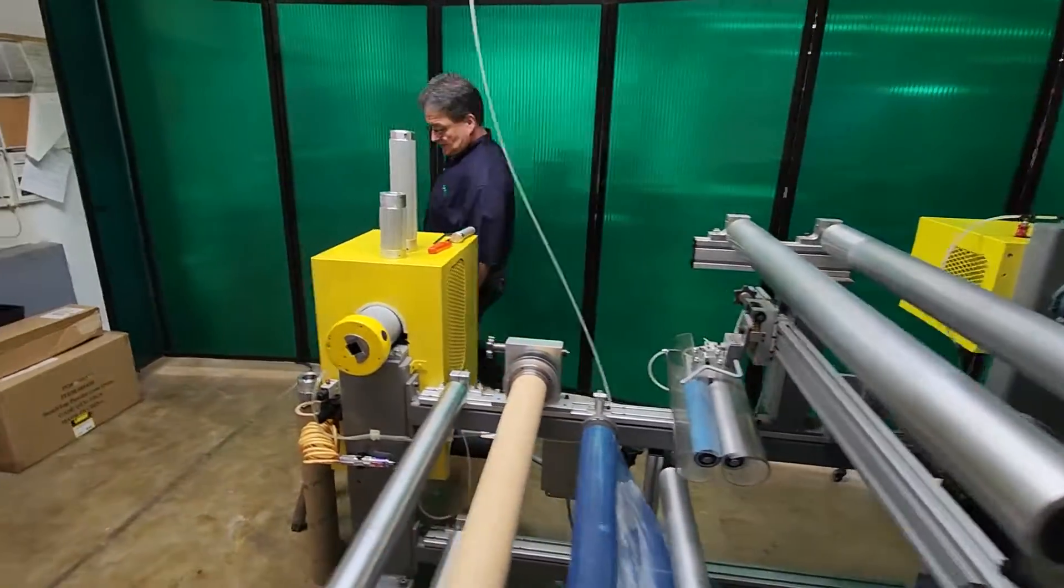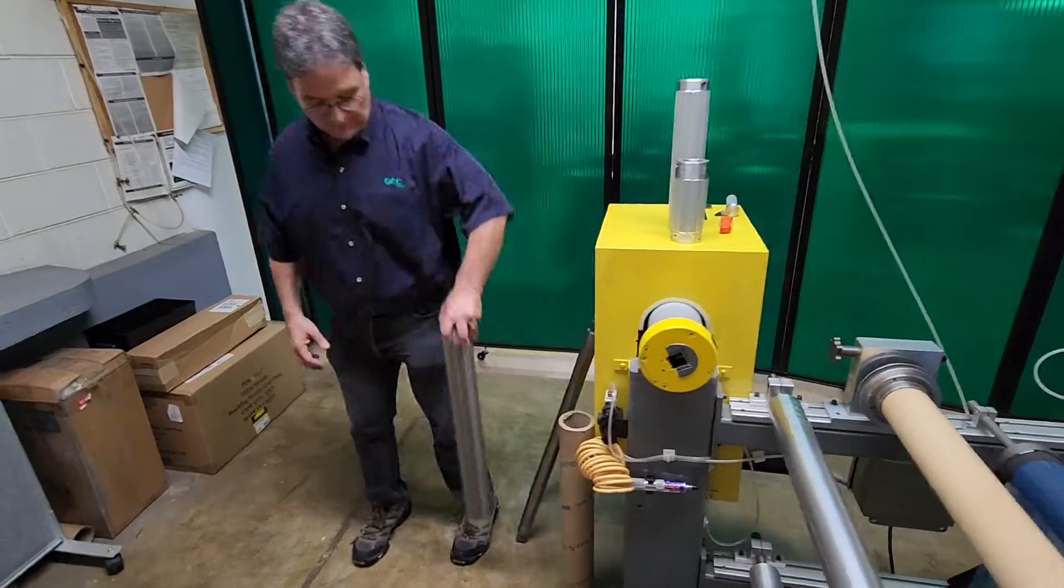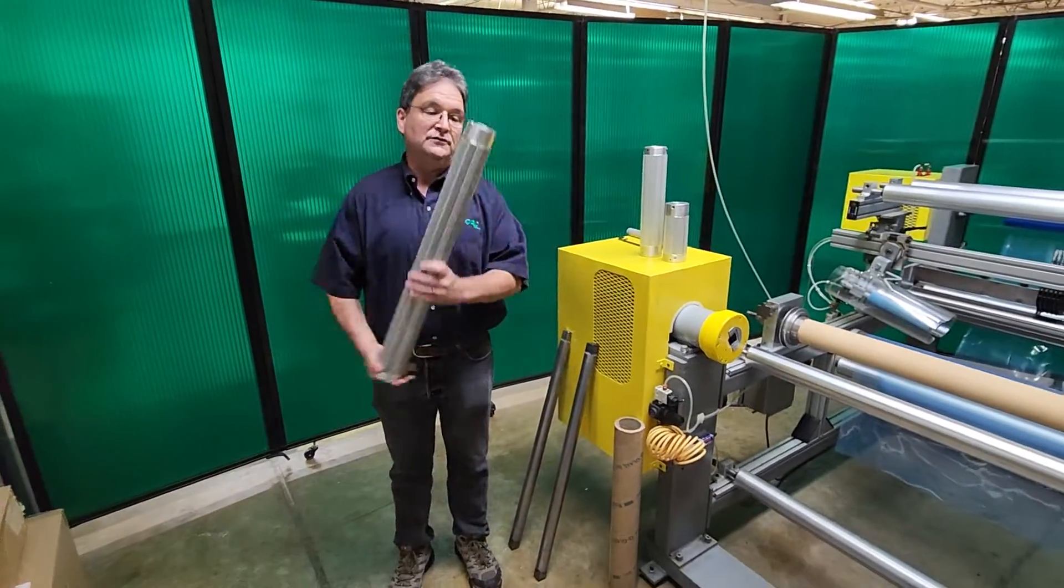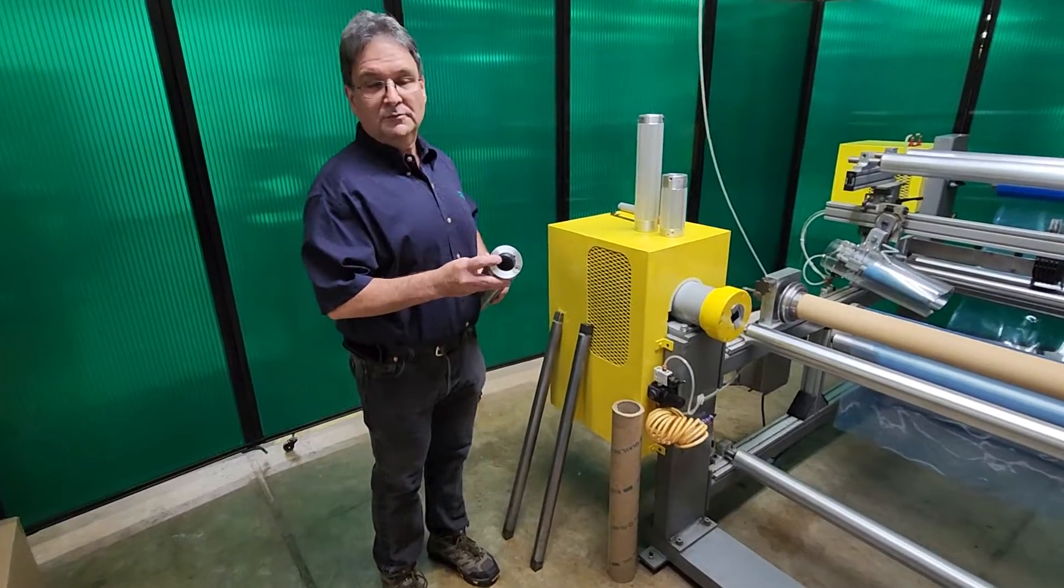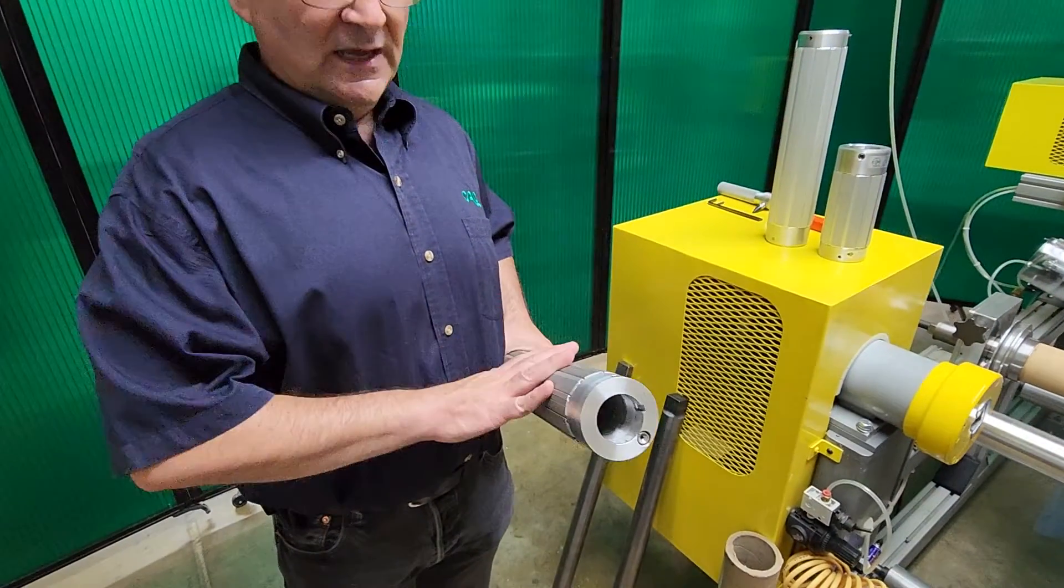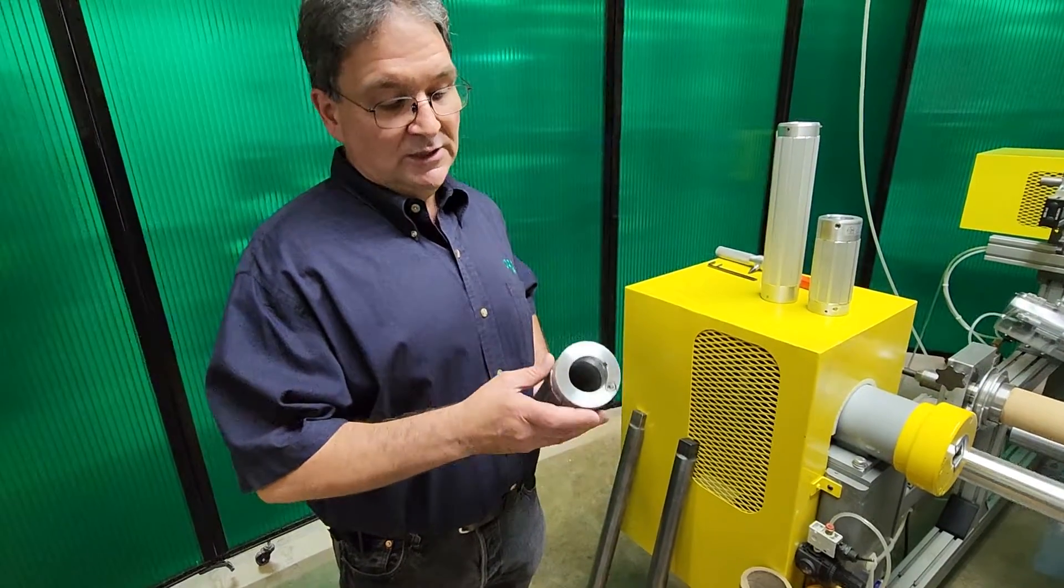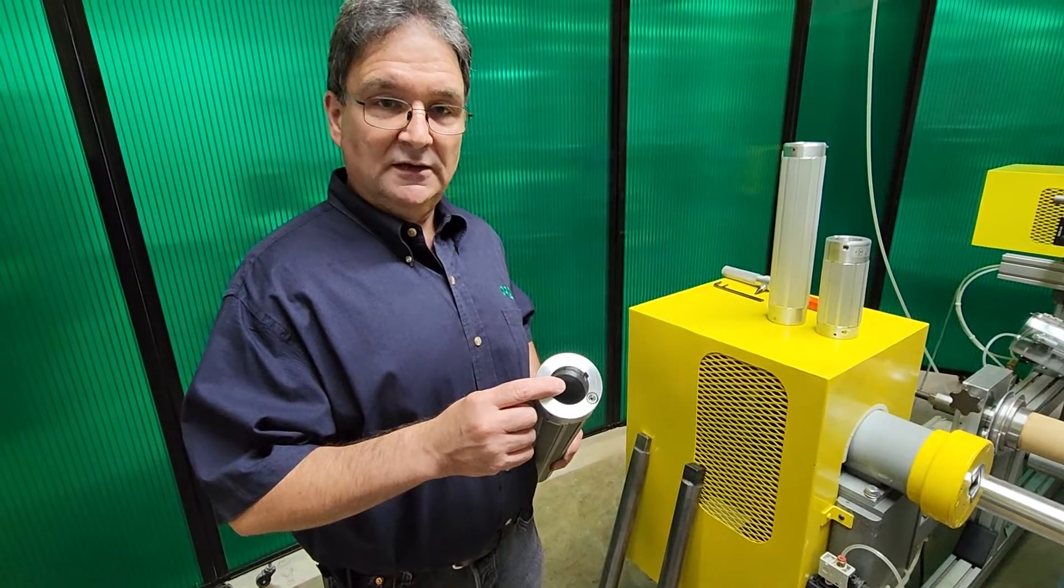This air shaft has a throughbore. Most of CAC's air shafts are supplied with throughbore so there's a hole through the middle. No matter what length or diameter of air shaft you buy from us, our common application is a throughbore through the center.